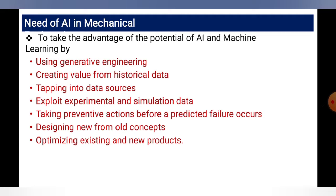Tapping into data sources means routing the data or indexing it — finding out where the data came from and indexing it so we can identify it later. Exploiting experimental and simulation data means gathering large amounts of experimental and simulation data to help with future studies, and taking preventive action before a predicted failure occurs.